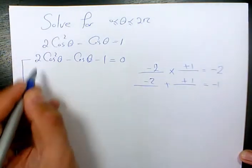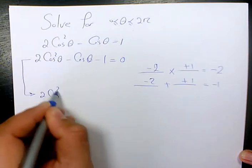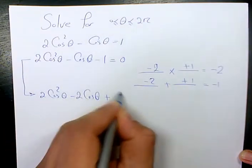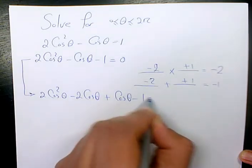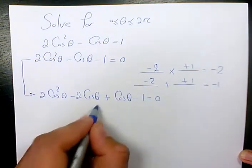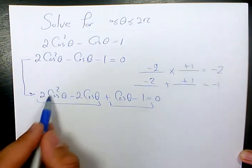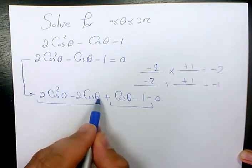So, then I will come and rearrange it. 2 cosine squared theta minus 2 cosine theta plus cosine theta minus 1 equals to 0. Then, I factor it by grouping. Here, I have 2 cosine squared theta minus 2 cosine theta.